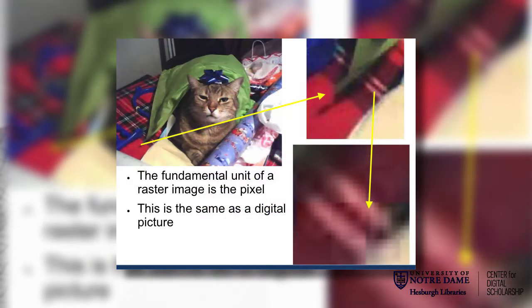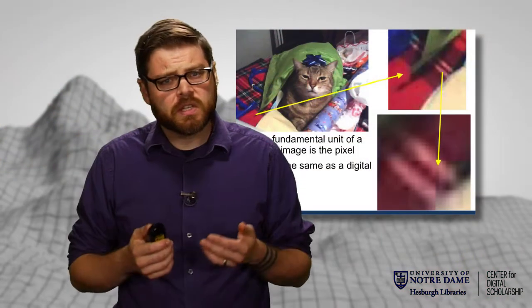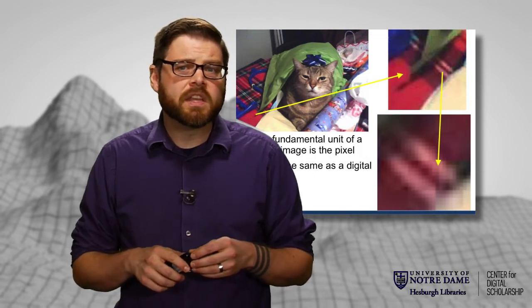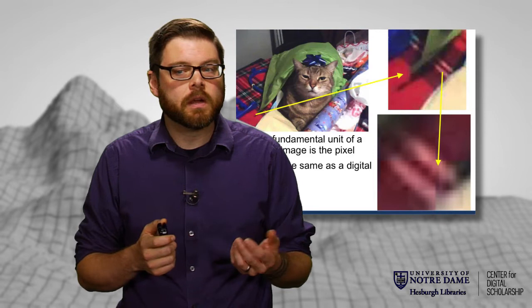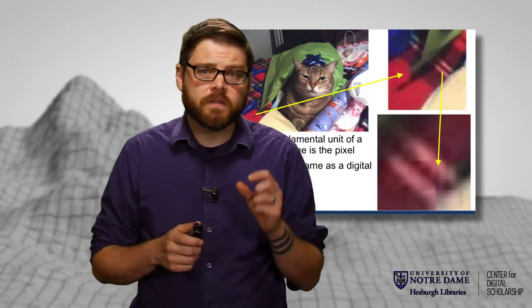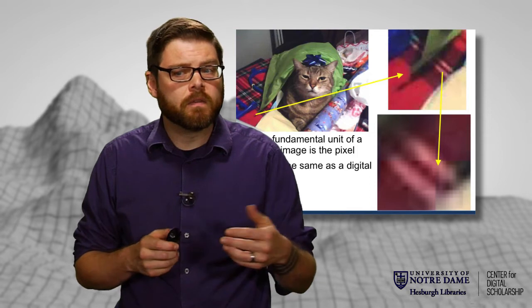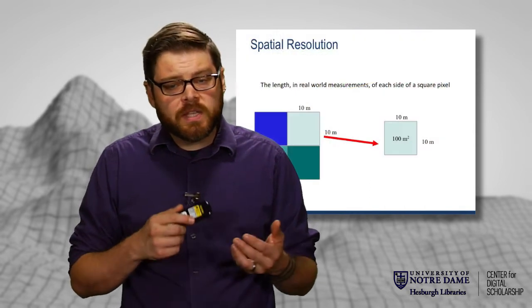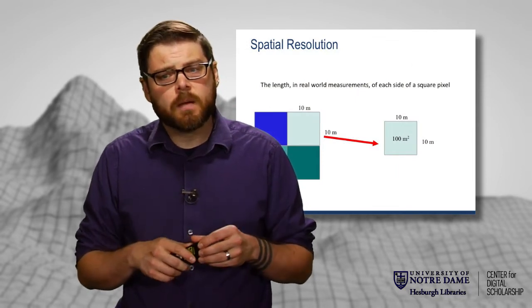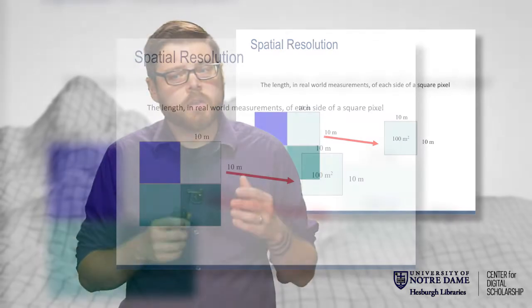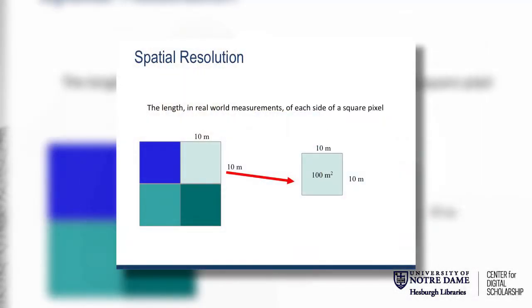Raster data is just like a digital photograph — if we zoom in far enough, we eventually see individual little spots of color. Just like this image of my cat, if we zoom in far enough, we see little spots of color we can't go in any further on. The difference in a GIS context versus a digital photograph is that in a photo, there's nothing inherently sizey about the pixels. One pixel at the very front of the image might cover a very small area of the real world, whereas one very far away might cover a much larger area. In a GIS context, this is what we refer to as the spatial resolution — in raster data, pixels are always the same size.